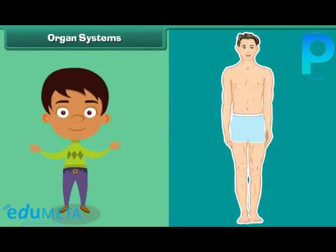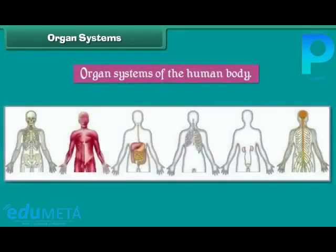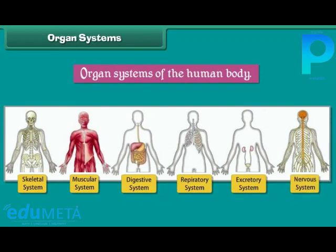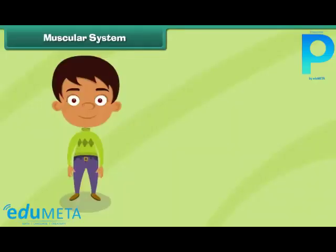The internal organs of the human body are grouped together to form different organ systems. Each organ system performs a special function. Some important organ systems of the human body are the skeletal system, muscular system, digestive system, respiratory system, excretory system, and nervous system. Let us now learn how each organ system works.